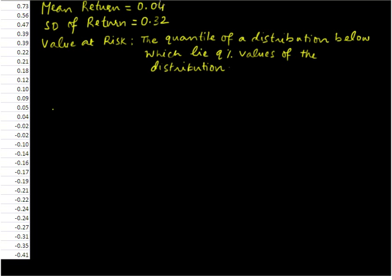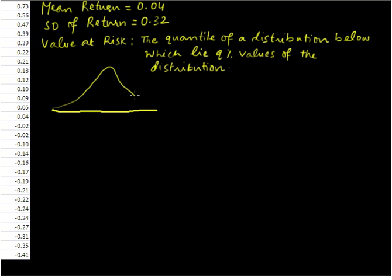The mean return from this data set has been pre-calculated and it is 0.04. The standard deviation of return is 0.32. This is the formal definition of Value at Risk: it is the quantile of a distribution below which lie Q percent values of the distribution. Let us see that by drawing a distribution. This is our mean value mu, and on the left and right side of it we plot the standard deviations. Positive deviations from return don't really concern us, so we are looking at the negative or left side of the mean return.